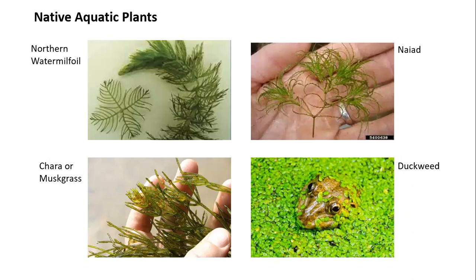Chara, or muskgrass, is pretty easy to confuse with starry stonewort — they look similar in appearance, but chara leaves aren't quite as long or gangly. When you crush that plant, you'll really notice that musky odor. Duckweed is a very, very tiny little plant, but it can get pretty dense and cover big areas of the water surface, which can be concerning to people. You're likely to encounter that one as well.